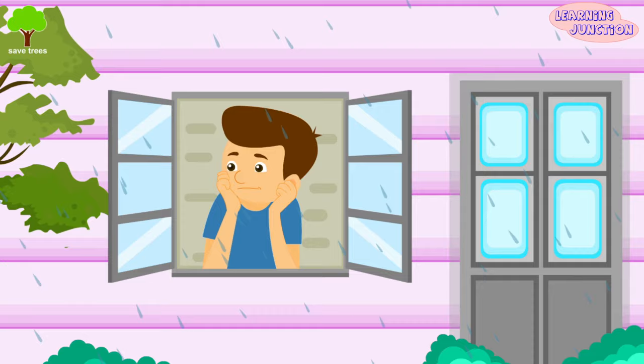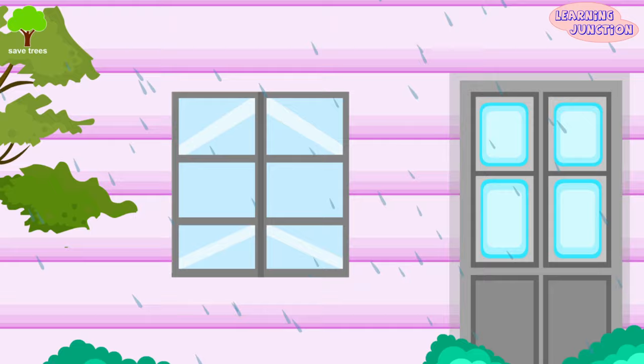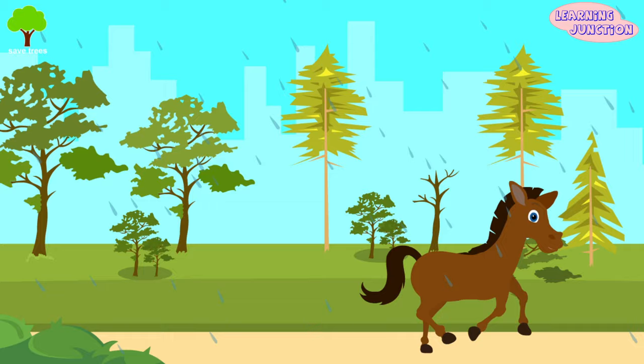You should be careful and stay at home when thunderstorms occur because all thunderstorms are dangerous. Every thunderstorm produces lightning, which kills a lot of humans and animals and also destroys trees.